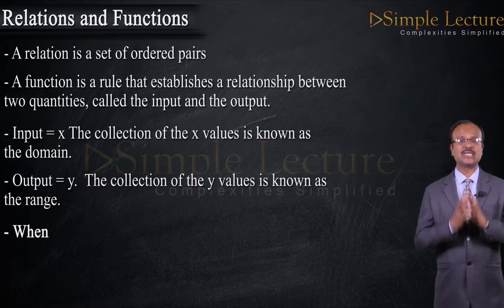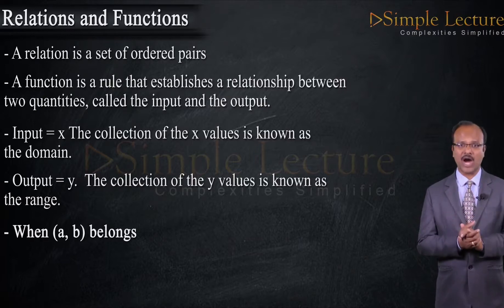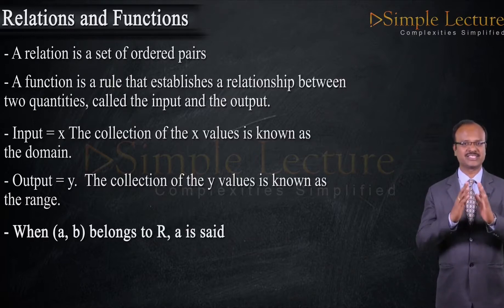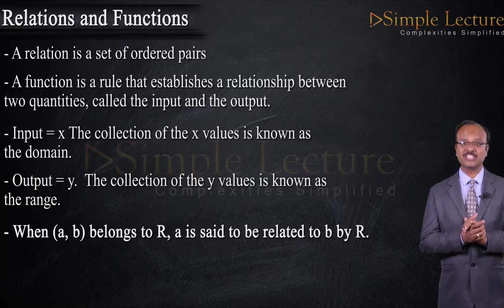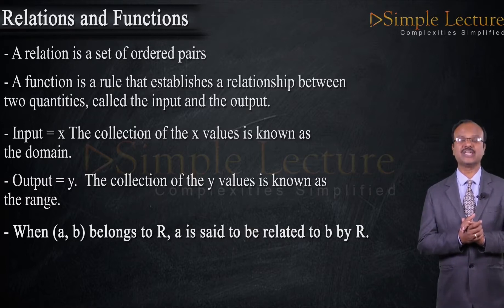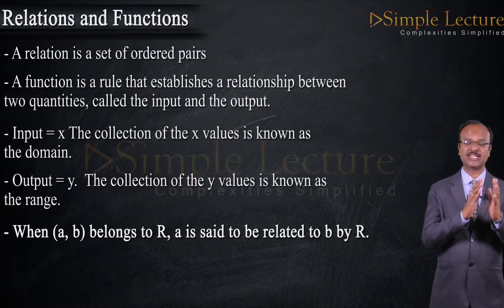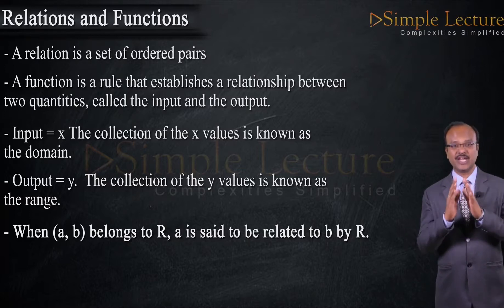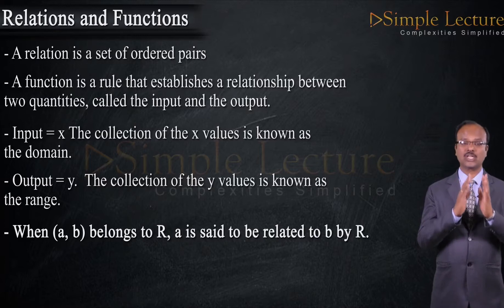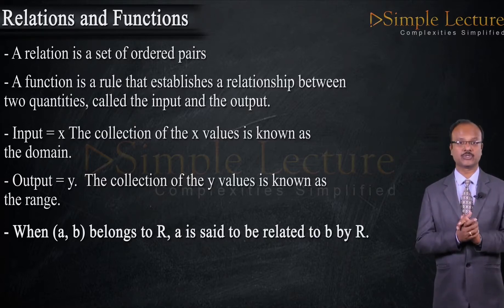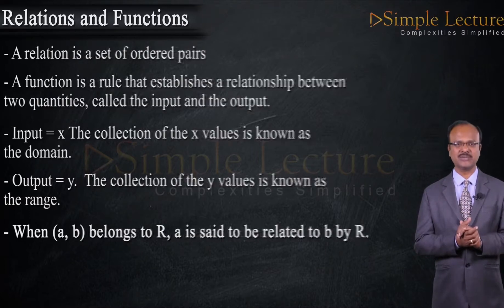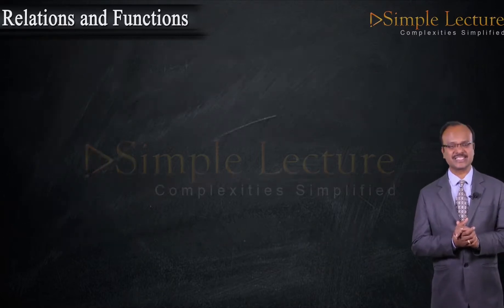When (a, b) belongs to r, a is said to be related to b by r. So that means the relationship r is defined in such a way that the element a is related in one or the other way with the element b. To understand this concept, let us take an example.